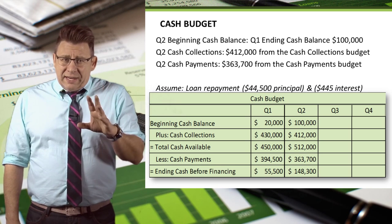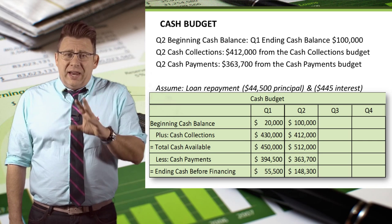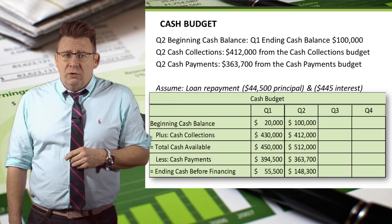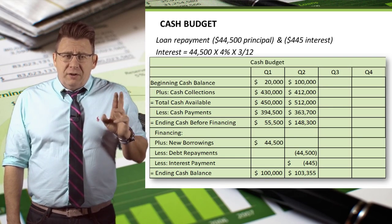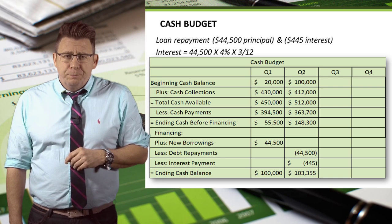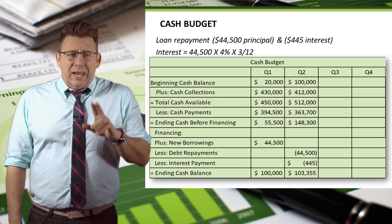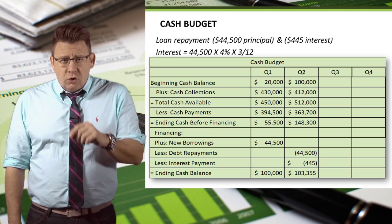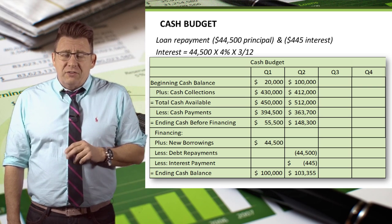For Q2, we add the Q2 cash collections and subtract the Q2 cash payments, giving us our ending cash balance before financing. Since the ending cash balance looks to be enough to pay off the loan, let's plan on doing that. We subtract the principal payment of $44,500 and the interest payment of $445. The interest is calculated as $44,500 times 4% annual interest times 3/12, because one quarter of the year is 3 twelfths. This gives us an ending cash balance of $103,355.